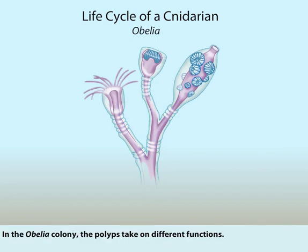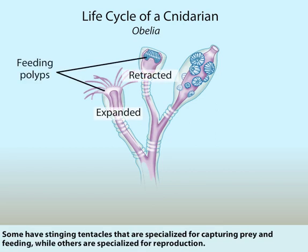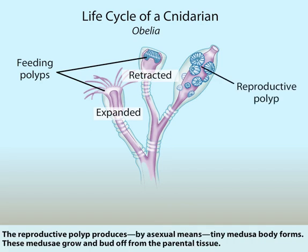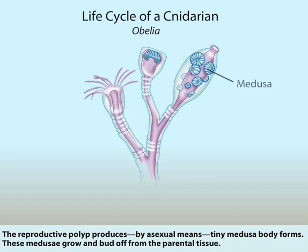In the Obelia colony, the polyps take on different functions. Some have stinging tentacles that are specialized for capturing prey and feeding, while others are specialized for reproduction. The reproductive polyp produces, by asexual means, tiny Medusa body forms.